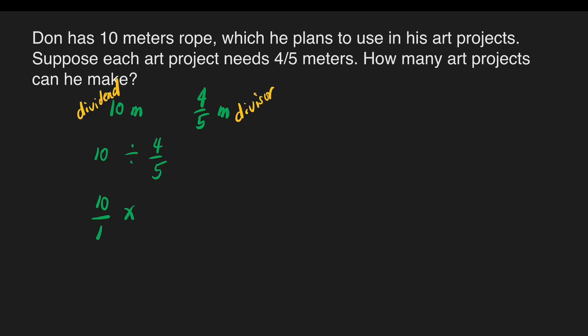We can rewrite the solution. We have 10/1, then change the division sign to multiplication sign, and change the divisor to its reciprocal. What is the reciprocal of 4/5? What do we multiply to 4/5 to get a product of 1? We multiply by 5/4. We cancel — giving 1 times 1 is 1 over 1. So the reciprocal of 4/5 is 5/4, which we write here.